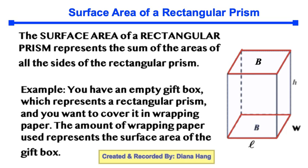The surface area of a rectangular prism is the sum of all the areas of all the sides of the rectangular prism. Here's a picture of a rectangular prism, and the bases outlined in red — there are always going to be two bases, one at the bottom and one at the top. Whatever shape that is — in our case it's a rectangle — that is how you name this prism.